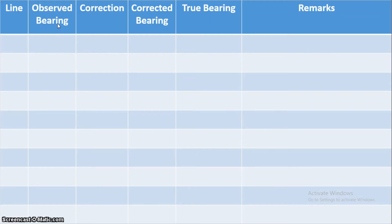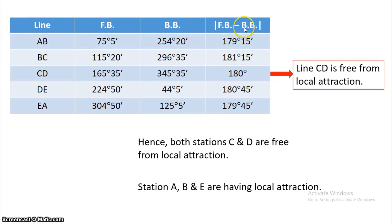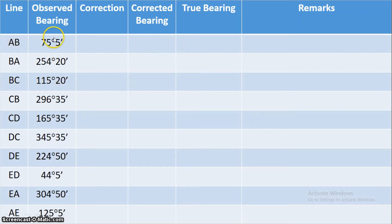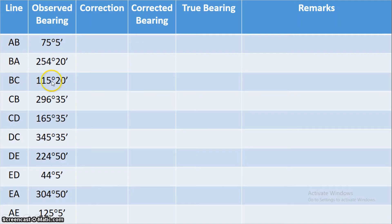In the table, forebearing and backbearing are not listed separately — they are combined in the observed bearing column. For line AB, the forebearing is from A and the backbearing is from B. The first letter of the line name indicates the instrument station. For example, AB means the instrument is at A, and BA means the instrument is at B.